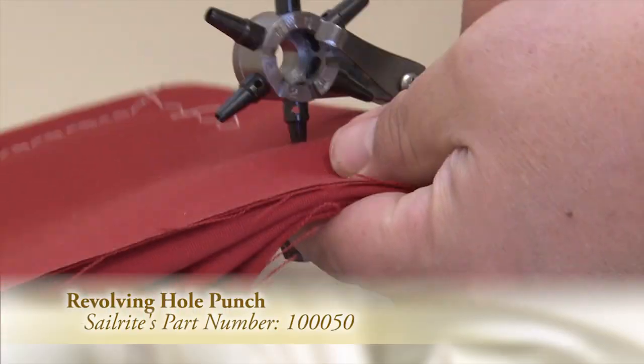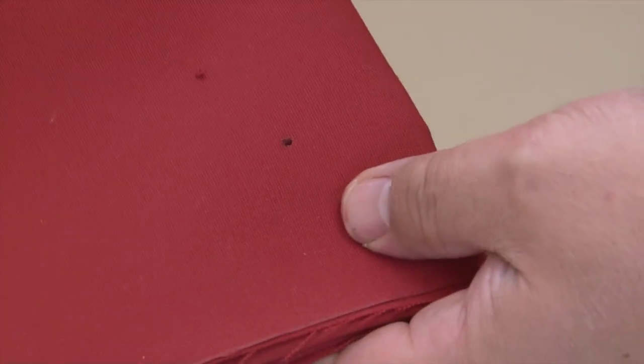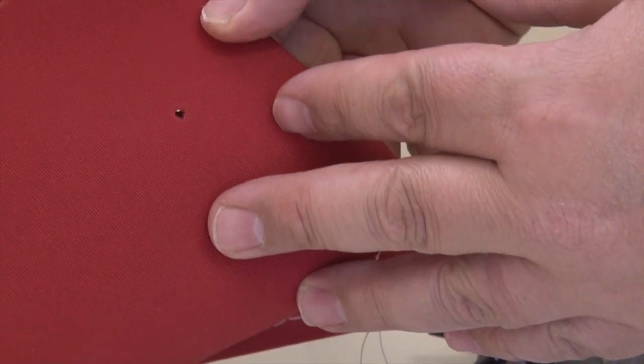It's great for putting holes in leather, sailcloth material, and even canvas. This is 8 layers of Sunbrella marine grade canvas and it punched right through.